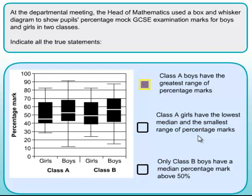Statement two: class A girls have the lowest median and the smallest range of percentage marks. Here's class A girls. The median is represented by the white line in the middle of the box — the line in the box part of the box-and-whisker represents the median — and here you can see it's clearly the lowest of any of the others. So that first part is true. And by eye you can also see it has the smallest range. So both parts of this statement are true.